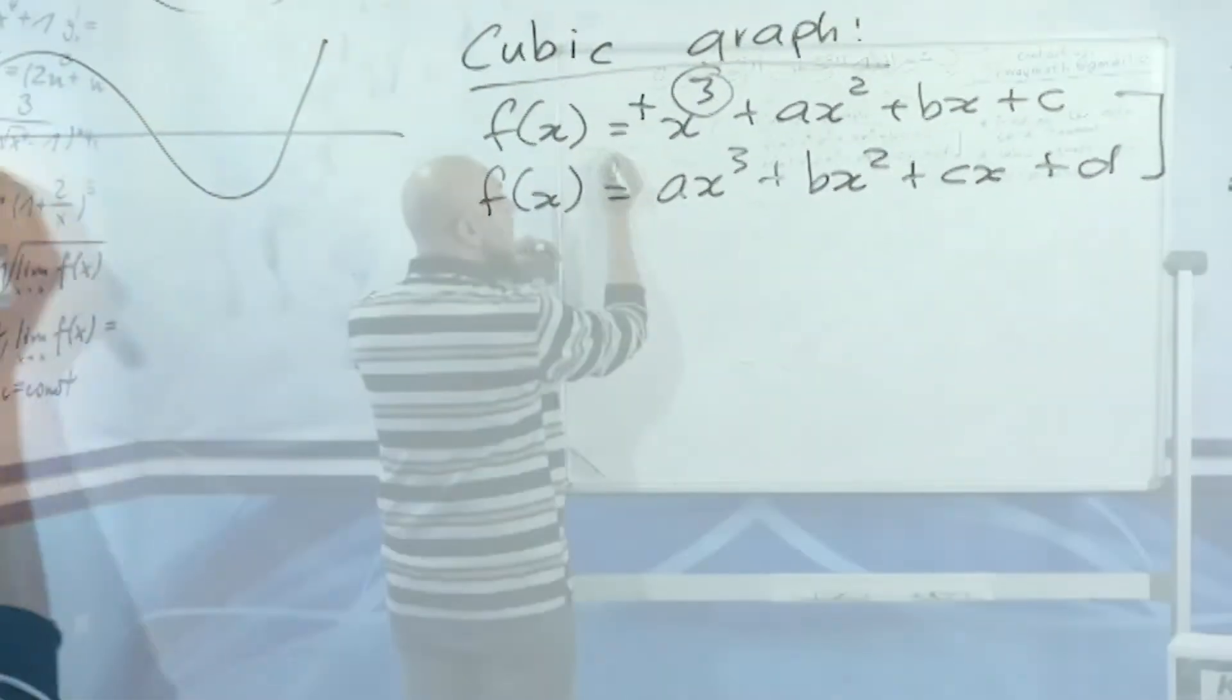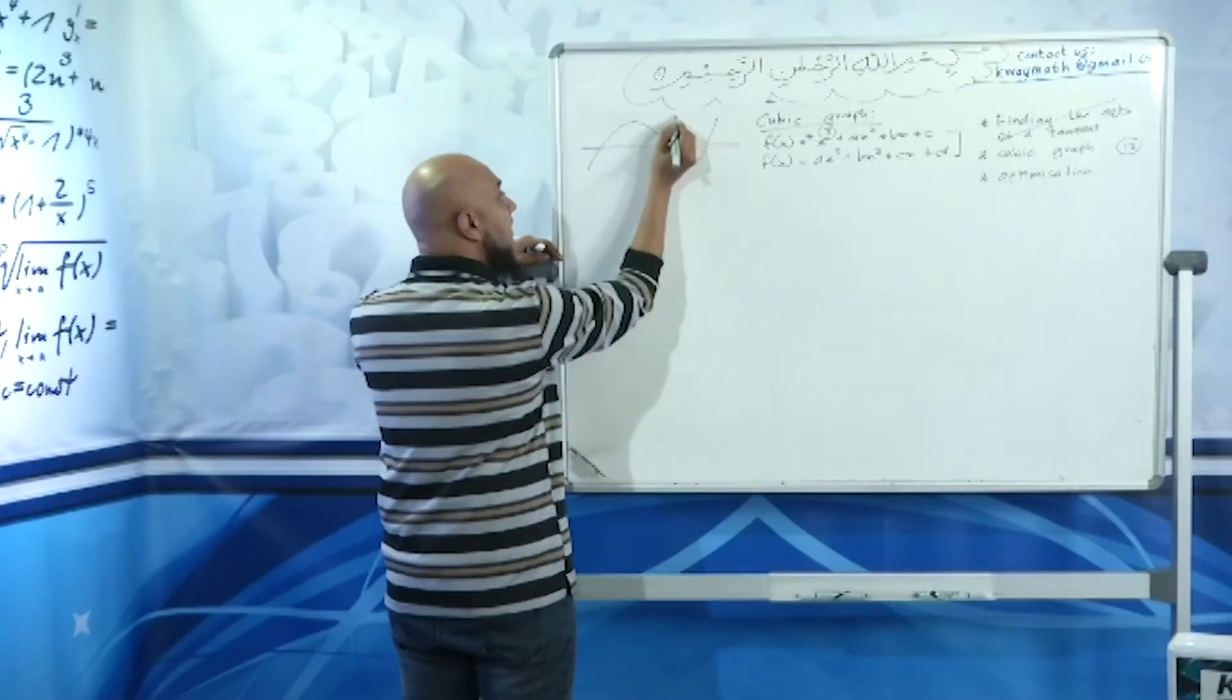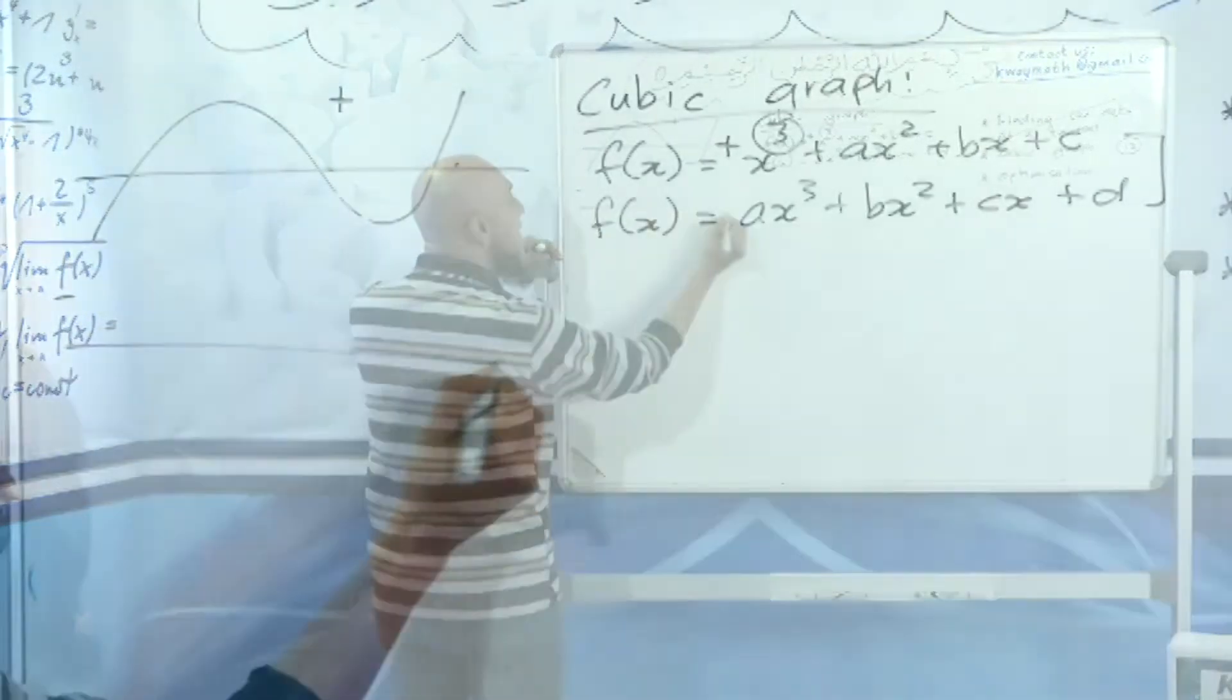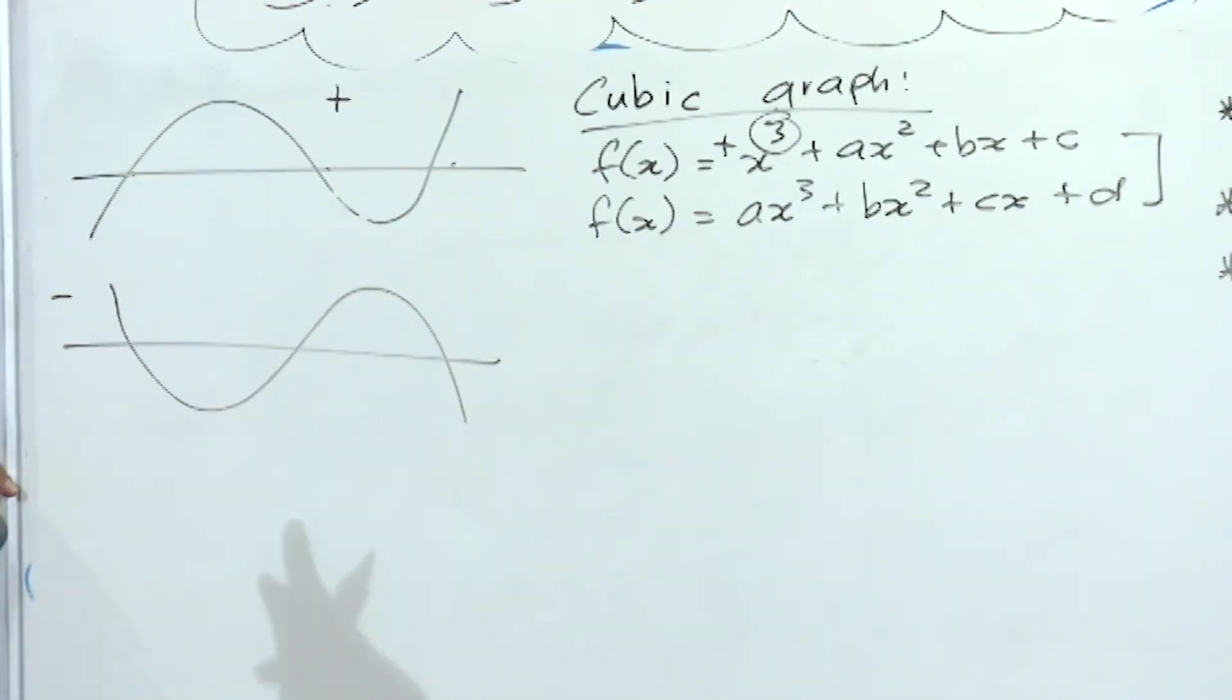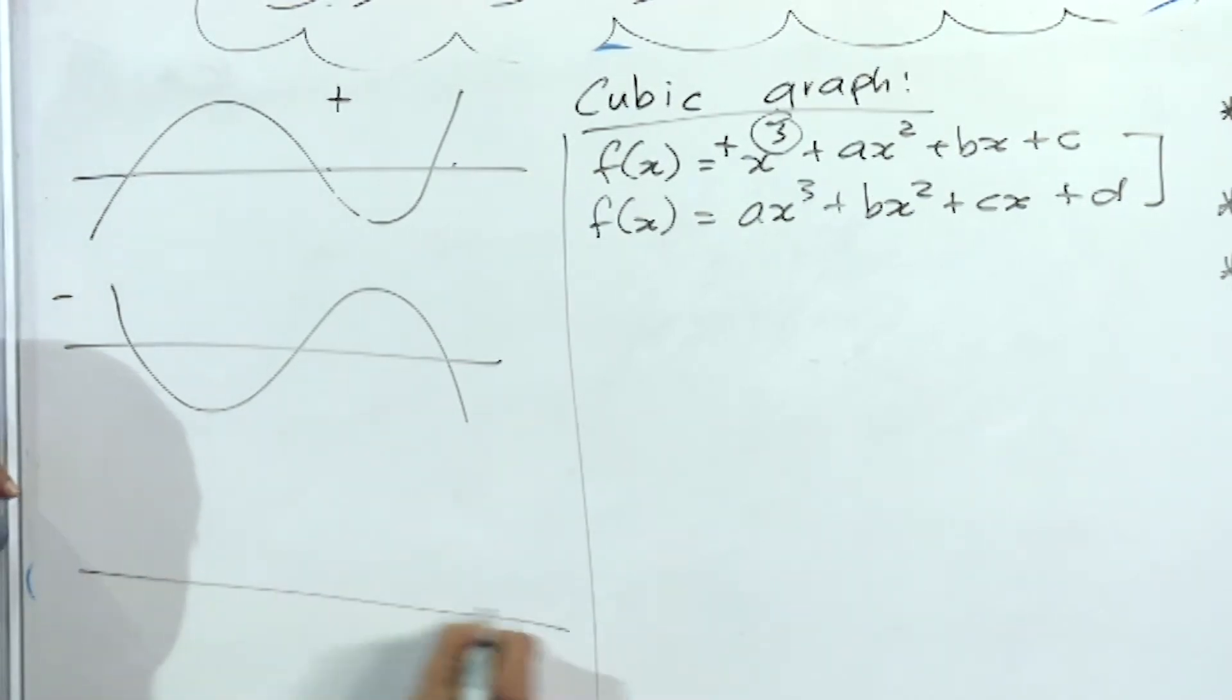If it's negative, the graph could look like this with three x-intercepts. Sometimes it might have two x-intercepts. For a positive graph, it might look like that, and for a negative graph, it might look like this.